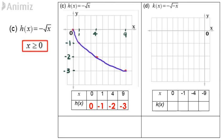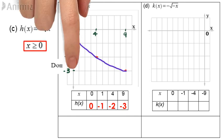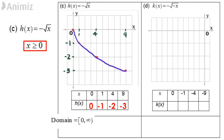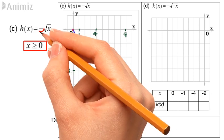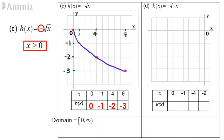The domain of negative square root x is from 0 to positive infinity. How about the range? The negative symbol before square root x indicates this is a decreasing function. Therefore, the range is from 0 to negative infinity.